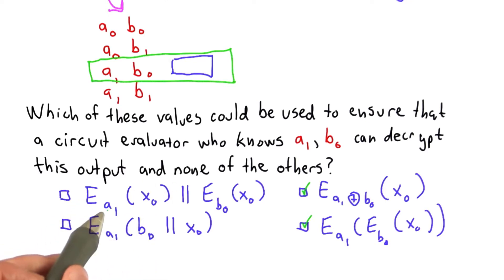So the first one, we're encrypting using a1 the value of x0, concatenating that with encrypting x0 using b0.